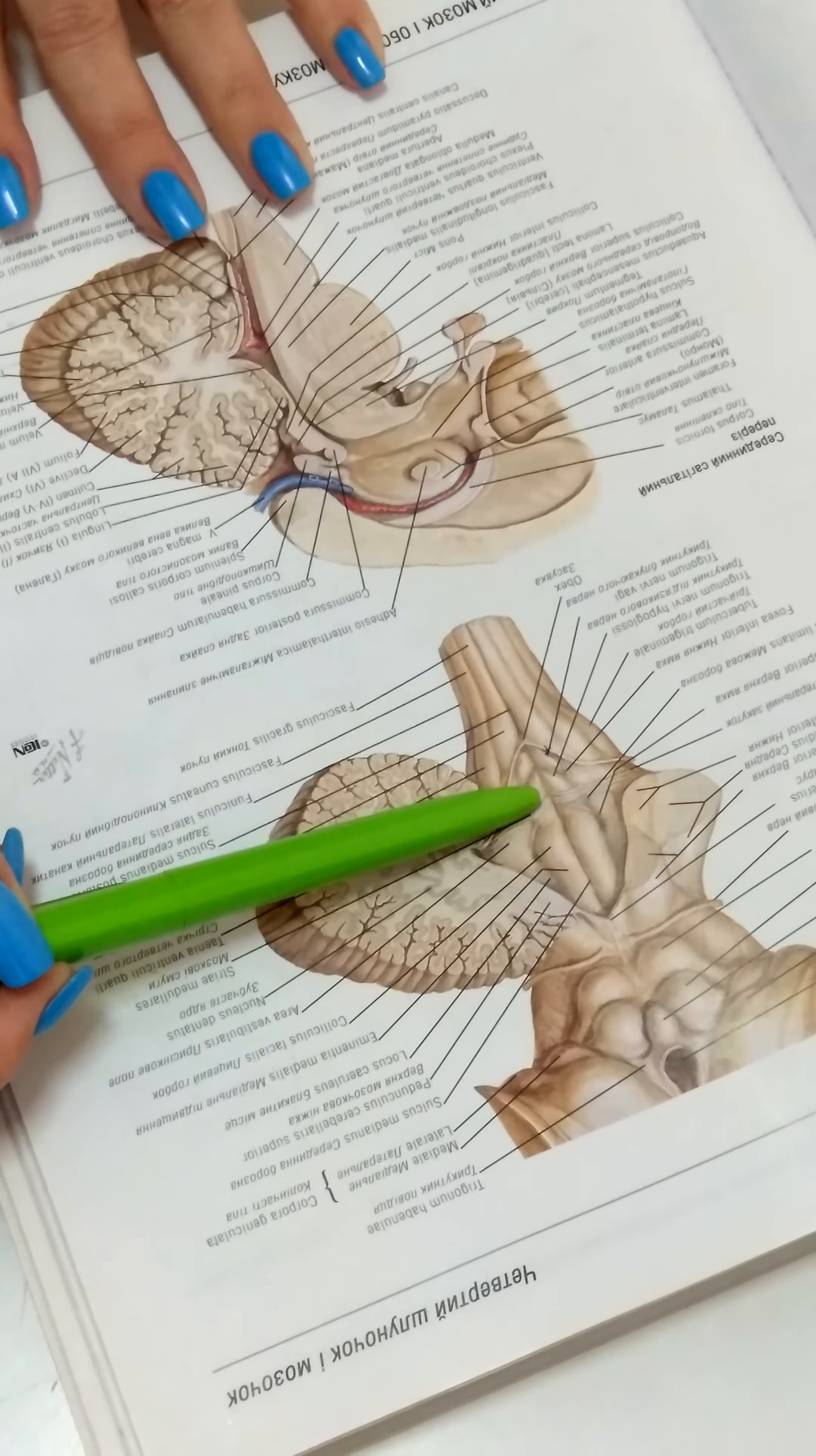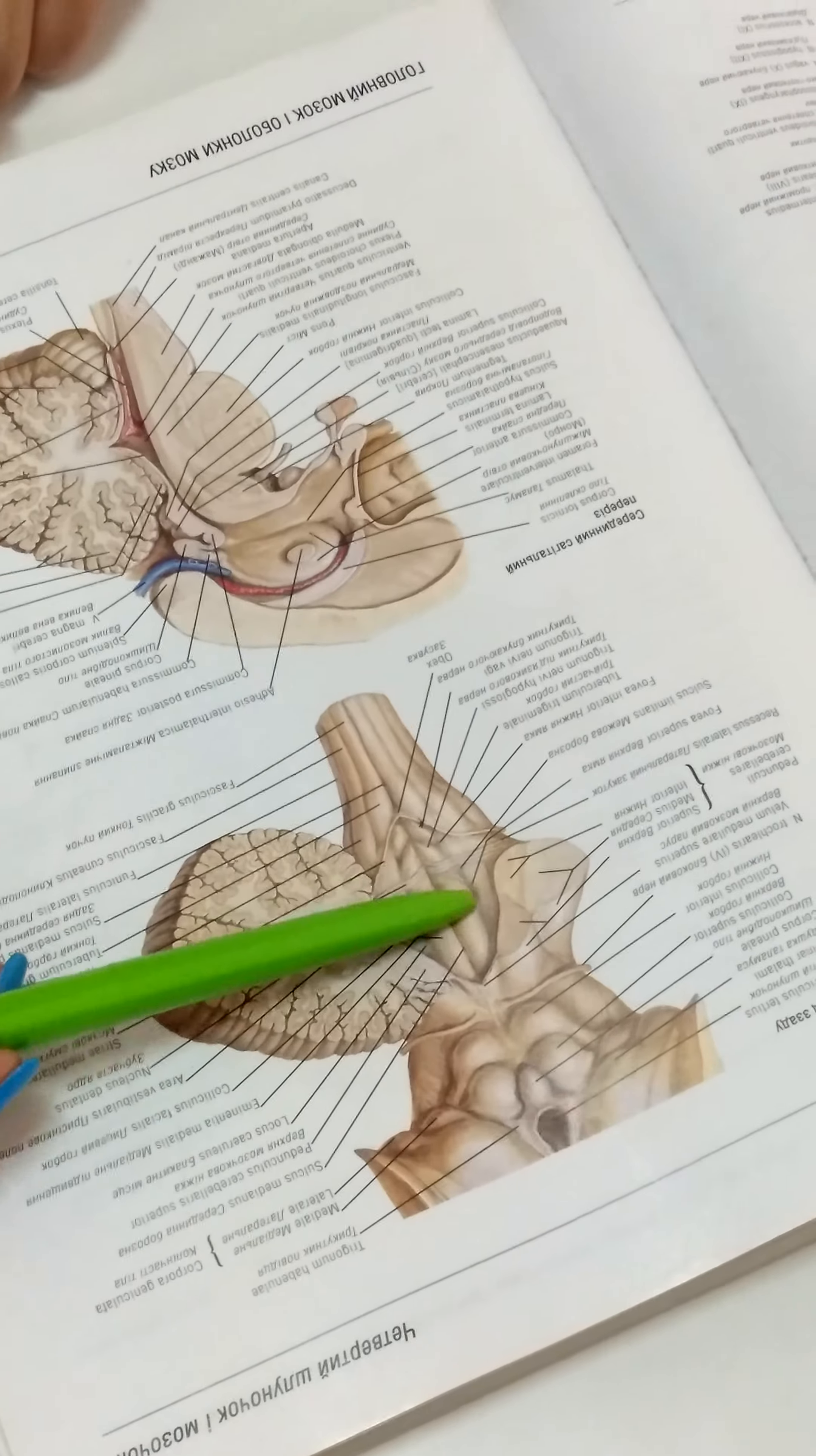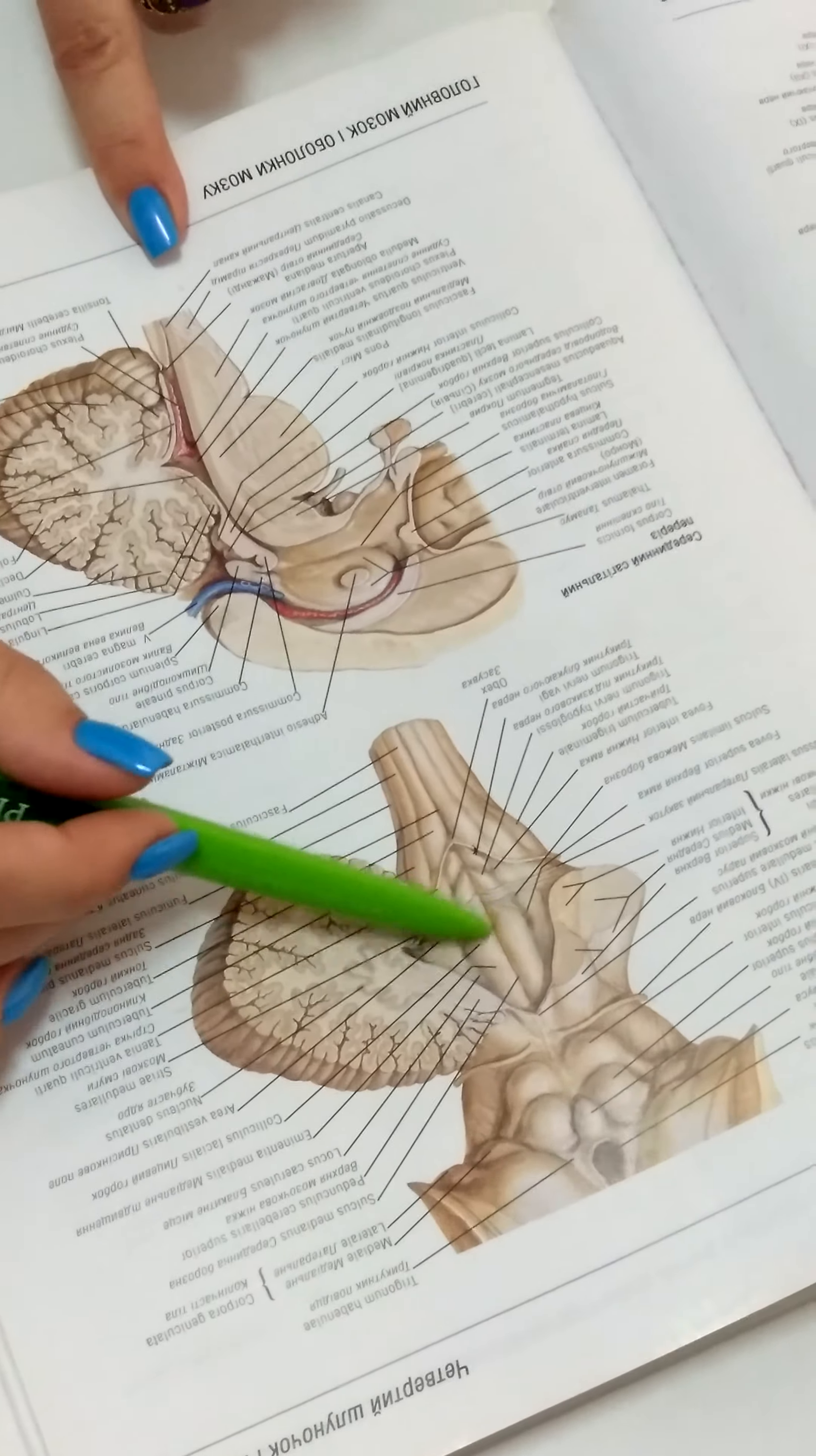Upwardly from striae medullaris on eminentia medialis, there is one tubercle, but paired, which is called colliculus facialis. In these collicles, nuclei of nervus facialis and nervus abducens are located in the deep portion of the substance of pons.